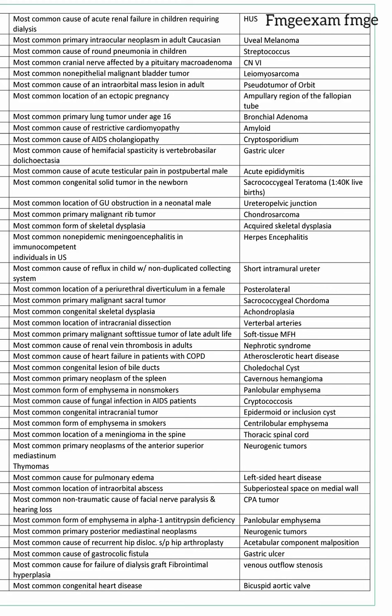Most common cause of reflux in children with non-duplicating collecting system is short intramural ureter. Most common location of periurethral diverticulum in female is posterolateral. Most common primary malignant sacral tumor is sacrococcygeal chordoma.